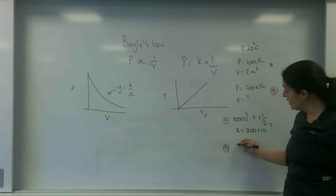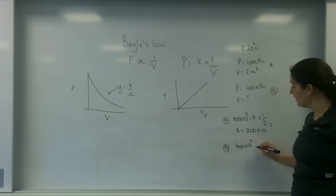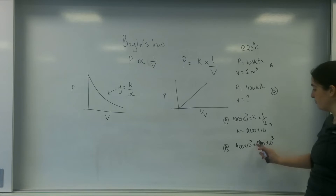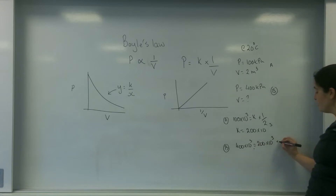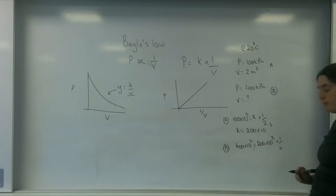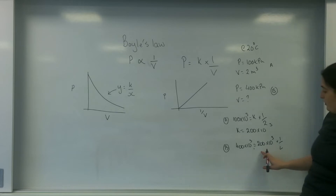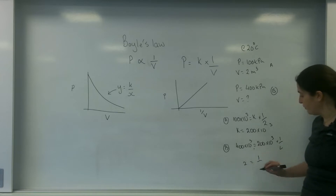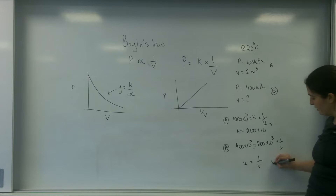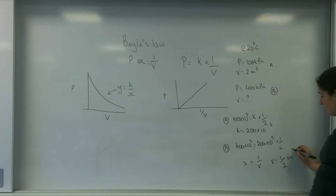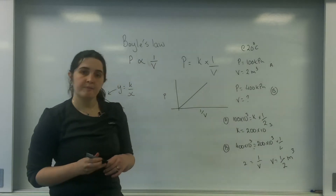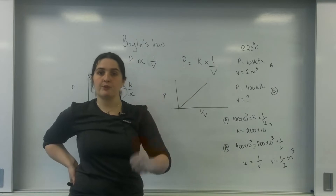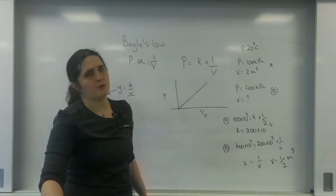This constant is the same for part B. So at part B, my pressure is 400 times 10 to the 3, which equals 200 times 10 to the 3 times 1 over volume. Moving that over, I've got 400 over 200 equals 1 over V, so 2 equals 1 over V. Therefore my V is 0.5 metres cubed. My pressure has increased by 4 times, which means my volume has decreased by 4 times.